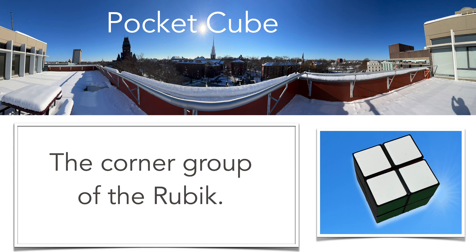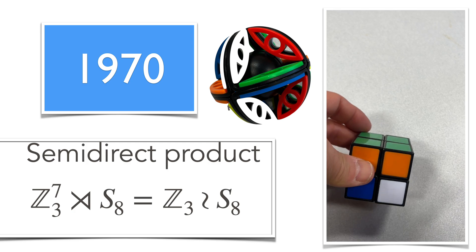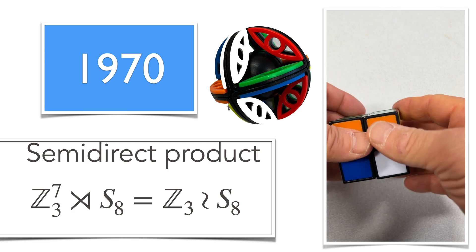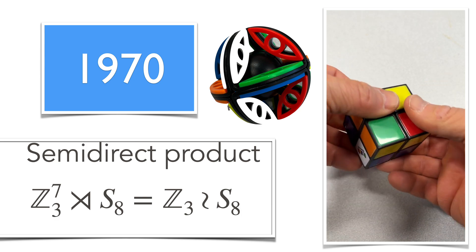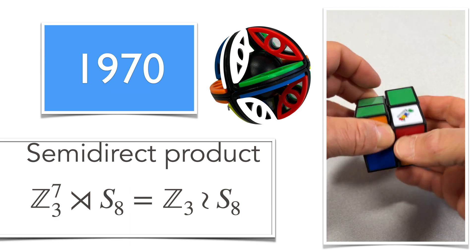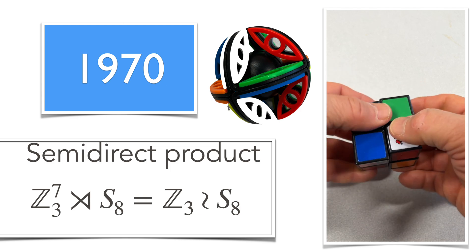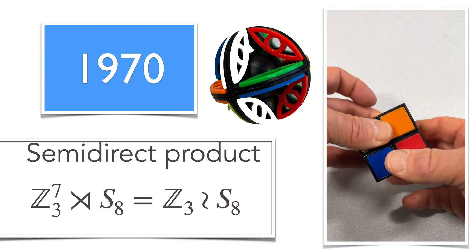The pocket cube is historically interesting because it was found even before Rubik, a couple of years before. It's also just the corner cube of the Rubik's cube, and it can be written naturally as a semi-direct product over the symmetric group with eight elements — all the permutations of the cube — but then there are also turns, and these are the fibers.